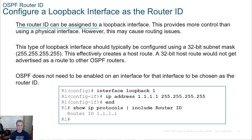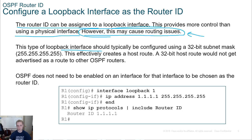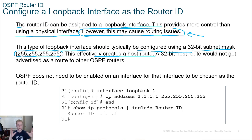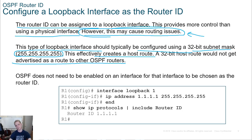The router ID can be assigned to a loopback interface, which provides more control. Using a physical interface may cause routing issues. A loopback should typically be configured using a 32-bit subnet mask - all 255s - which effectively creates a host route, meaning there's only a route to that one specific IP address, not an entire network. Importantly, OSPF does not need to be enabled on an interface for that interface to be chosen as the router ID - it just needs to be an active interface.